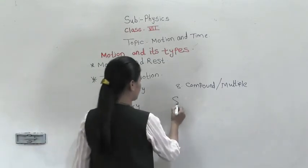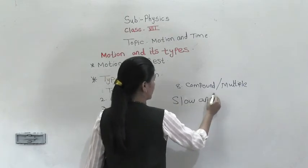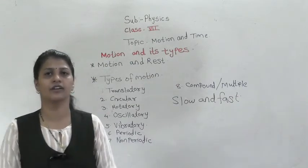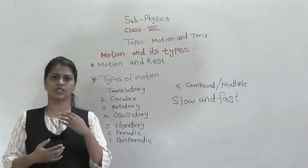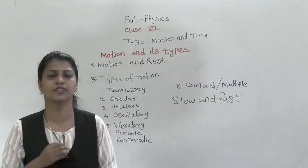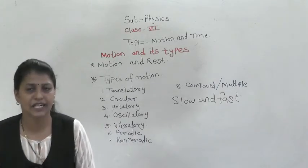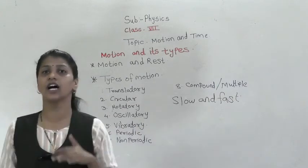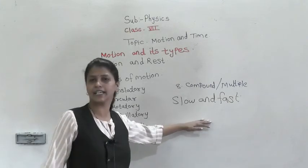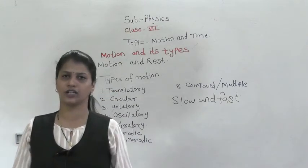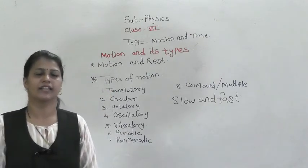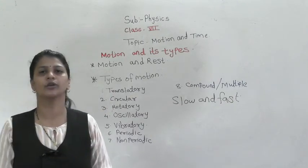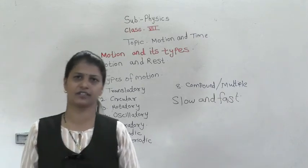Slow motion means when an object moves with less speed. The concepts of slow and fast motion are related to speed, which we will cover in the next video. Today's work: write at least five examples for each type of motion that we have learned today. Thank you.